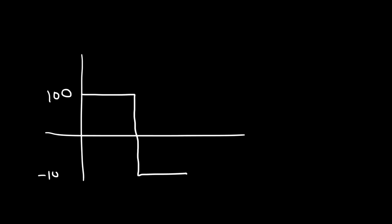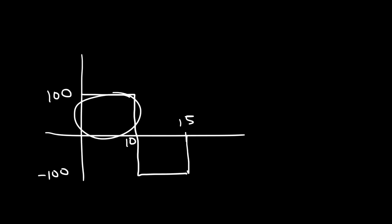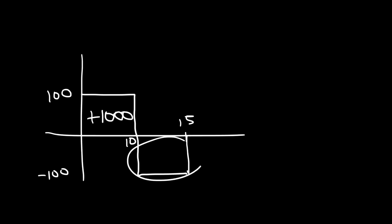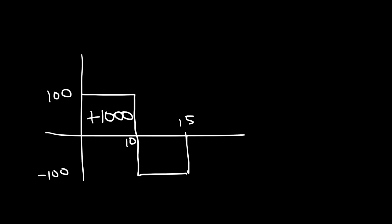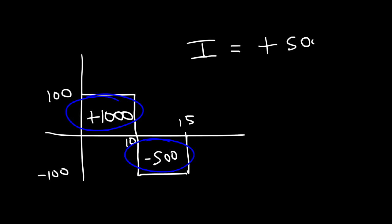Here's another example. Say we have a graph with a positive force of 100 newtons from 0 to 10 seconds, then a negative force of 100 newtons from 10 to 15 seconds. The area of the first rectangle is 100 × 10 = 1000 (positive). The second rectangle has length 100 and width 5, giving −100 × 5 = −500. The net impulse from 0 to 15 seconds is 1000 + (−500) = positive 500 newton-seconds.